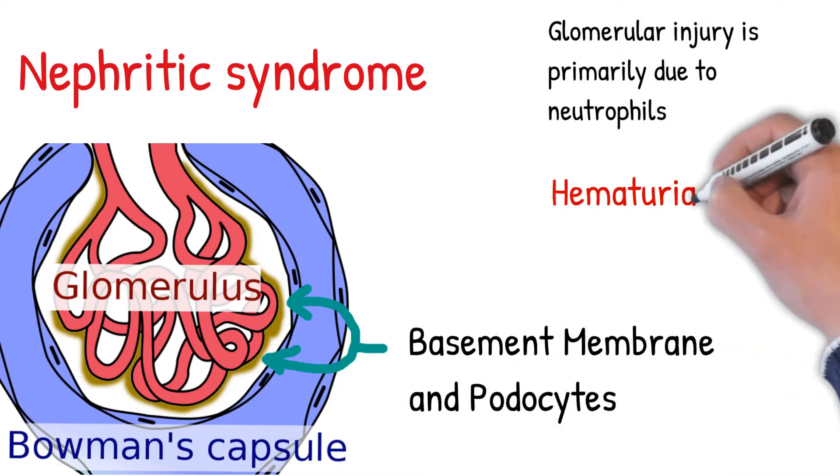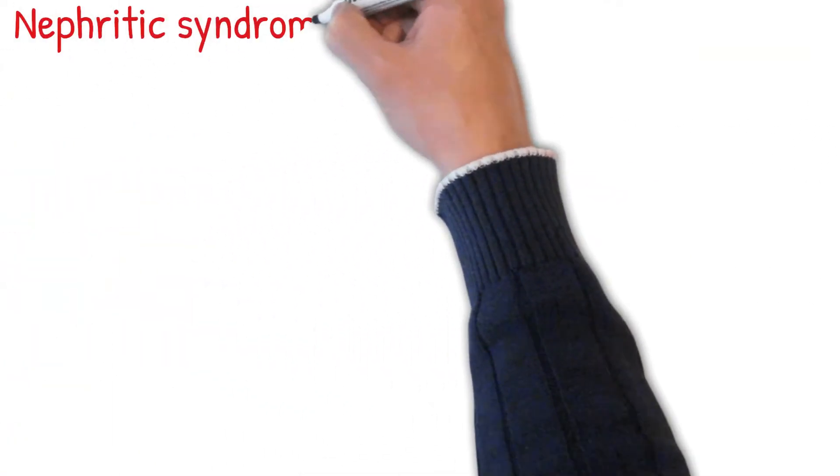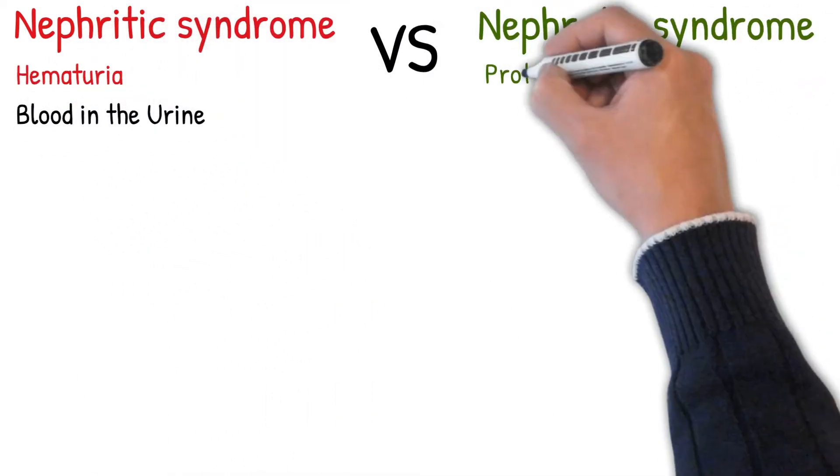The main characteristic of nephritic syndrome is hematuria, blood in the urine. By contrast, nephrotic syndrome is characterized by proteinuria and other symptoms that specifically do not include hematuria.